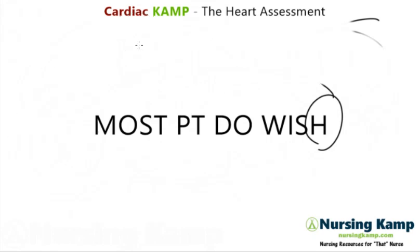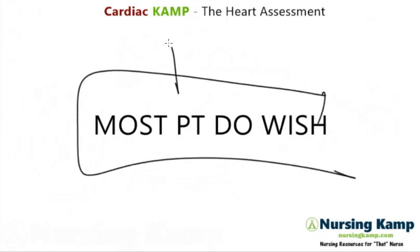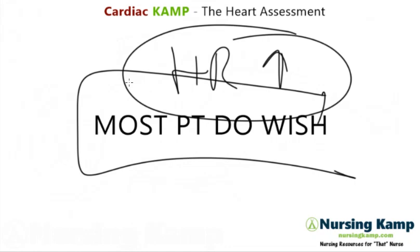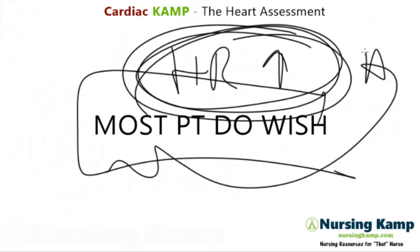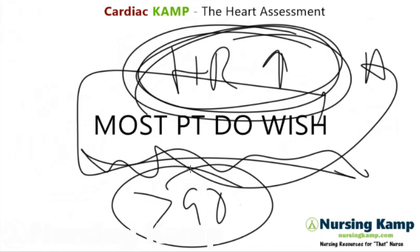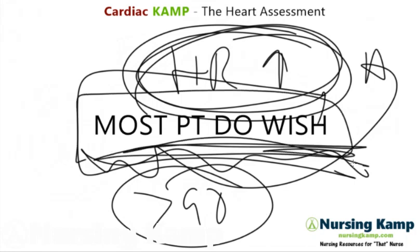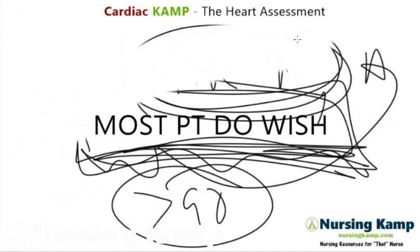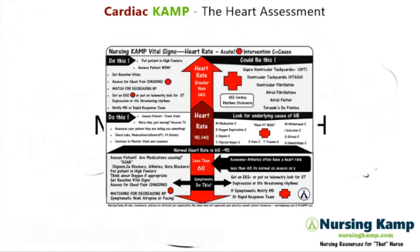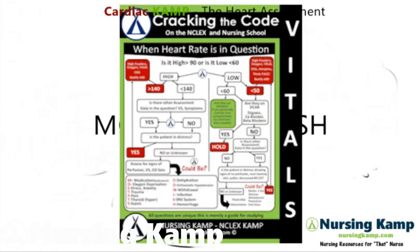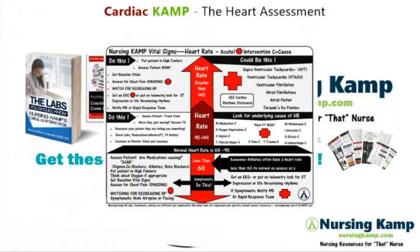In summary, when looking at 'MOST PATIENTS DO WISH,' we're looking at all causes for a high heart rate. On NCLEX questions, whenever you see an elevated heart rate, think about these conditions. In practice, when you see greater than 90, ask why it's high — it's usually one of these causes. Always assess your patients and look for the underlying cause. My name is Nursing Camp. This is from my sticky notes on heart rate and Cracking the Code. Thank you and we'll see you next time.